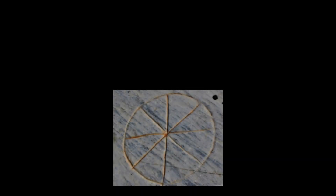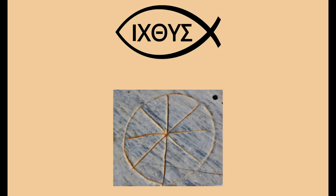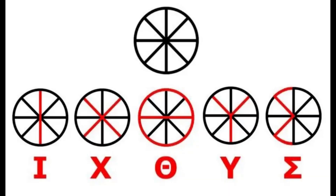Now you may ask: what does this wheel have to do with the fish? Well, if you look carefully, you can see that the wheel is actually composed of all five of these letters superimposed, as you can see here in red.